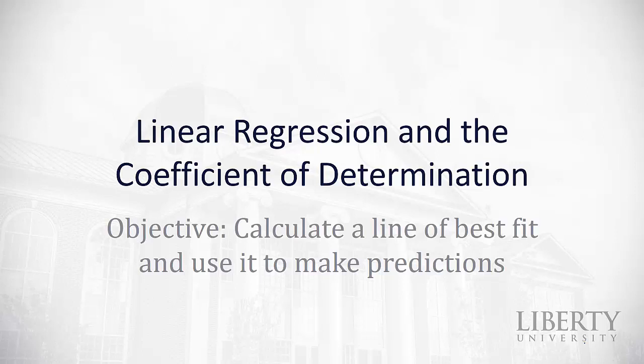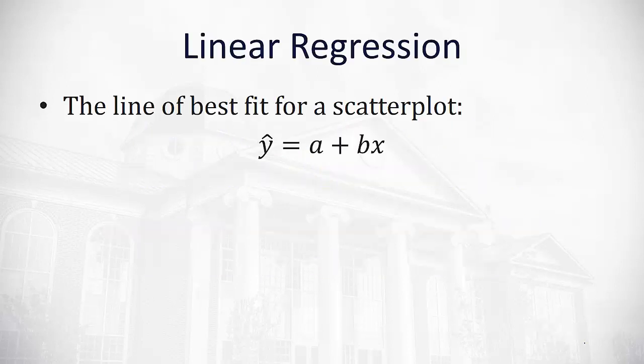This video continues our conversation of correlation and extends it to calculate a line of best fit and use it to make predictions in linear regression. Linear regression is finding the line of best fit for a scatter plot. We represent it with y hat equals a plus bx. A represents the y-intercept and b represents the slope.